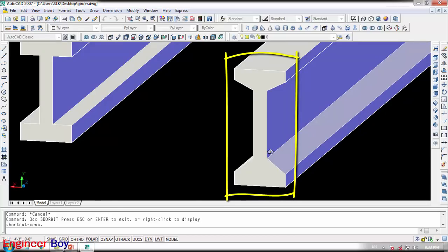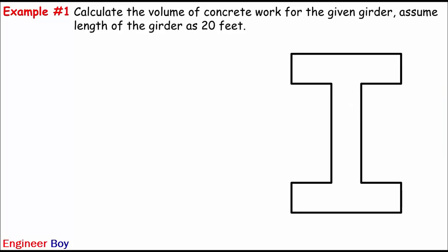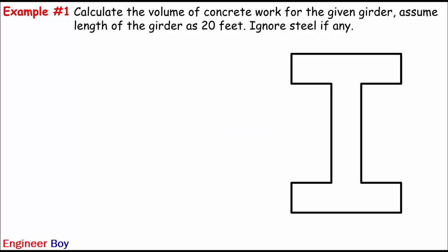Let me go back into my presentation. To understand the problem better, I just want to do an example. We are asked to calculate the volume of concrete work for the given girder. We are also asked to assume the length of the girder is 20 feet, and to ignore any type of steel. This is a standard section, and these dimensions are enough to calculate the volume of concrete work for the given girder section.